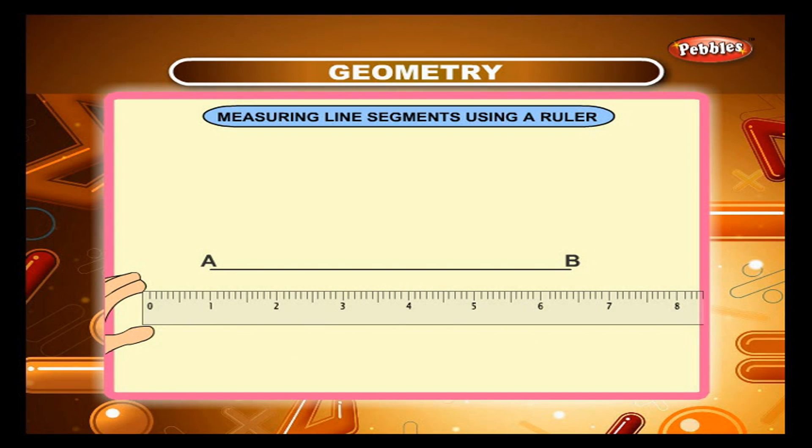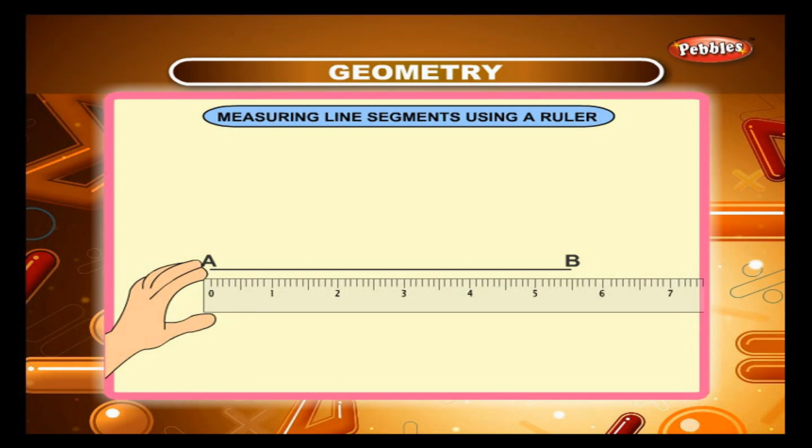Place the ruler along the line segment AB. Adjust the ruler such that its zero mark coincides with one end A of the line segment. Read the mark on the ruler at the other end B of the line segment. 5.5 cm in the above figure.